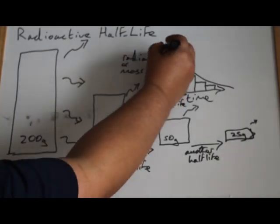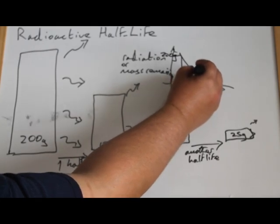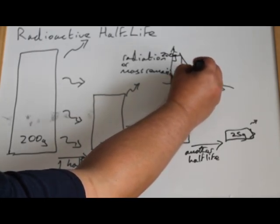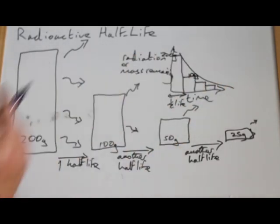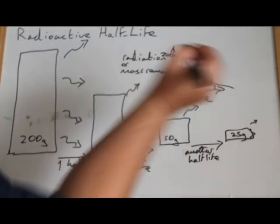So if you start off with 200, here, you're looking for the point where you're down to 100. Or if you start off with 100, you're looking at the point where you're down to 50, and so on.